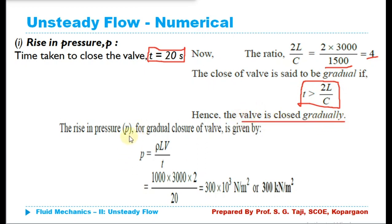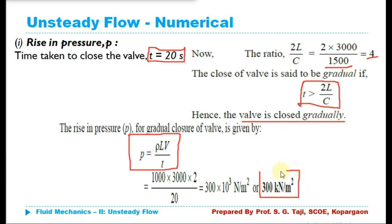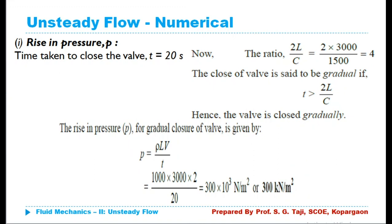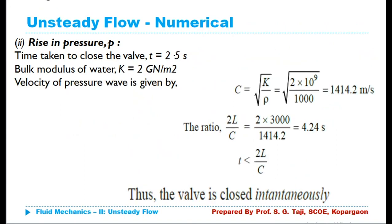In case of gradual closure of the valve, the pressure intensity is calculated using P = ρLV/T. Putting in all the values, the pressure intensity comes out as 300 kilonewton per meter square. This is the pressure rise in case of gradual closure when the time taken to close the valve is 20 seconds.